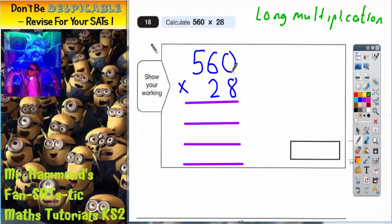On the top line we're going to times the 560 by the number of units, which is 8. So we're going to do 8 nothings, 8 sixes, and 8 fives in that order. 8 lots of 0 is 0. 8 lots of 6 is 48, put the 8 and carry the 4. 8 lots of 5 is 40 plus the 4 is 44. So we've got 4480.